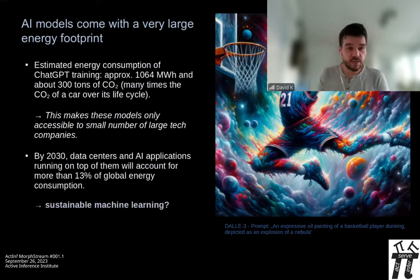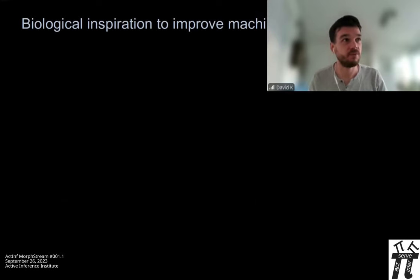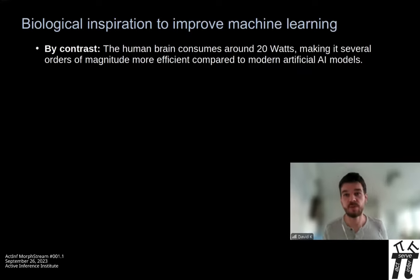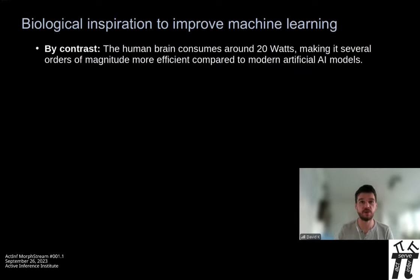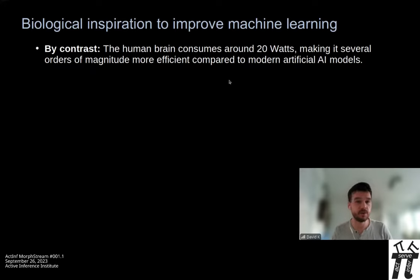Does sustainable machine learning exist at all? I believe it does, because we know a system that is very efficient and still probably better than these AI models — the human brain, which consumes around 20 watts or four bananas a day. It's many orders of magnitude more efficient than the AI models we have today. But so far we don't know how these networks work and especially how to train them.